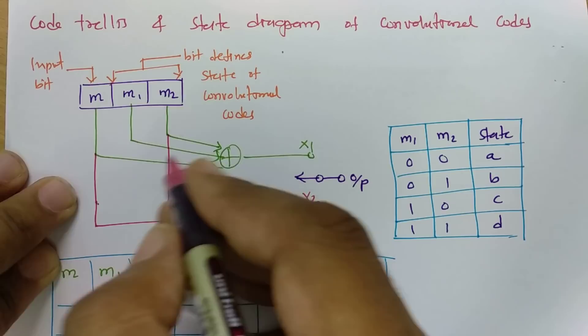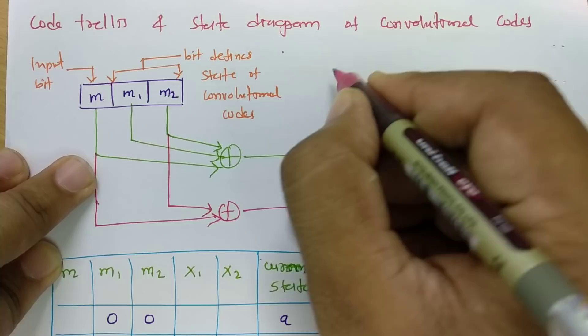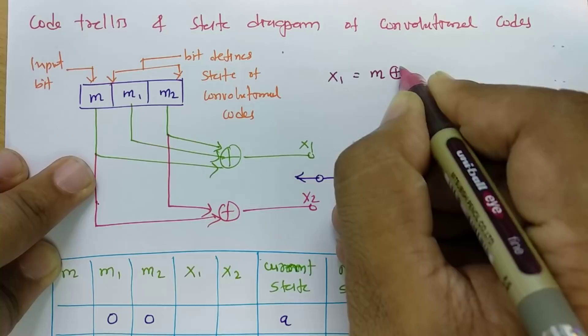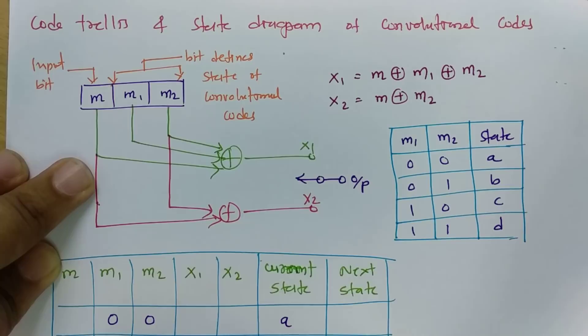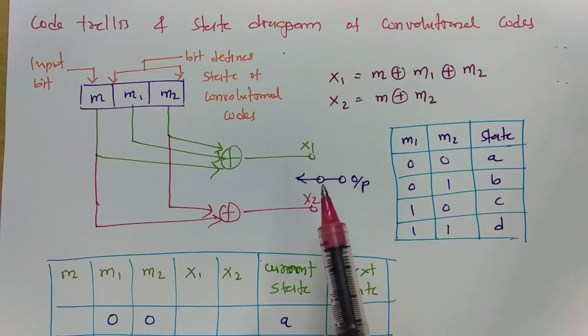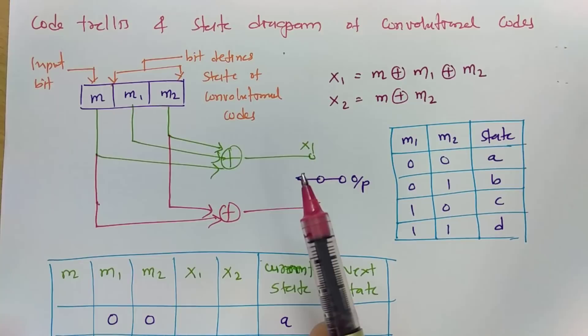x1 is the modulo-2 sum of m, m1, and m2. And if you see output x2, that is the modulo-2 sum of m and m2, and the output is switching between these two. In this session, I will be explaining how we can have a code trellis and state diagram.